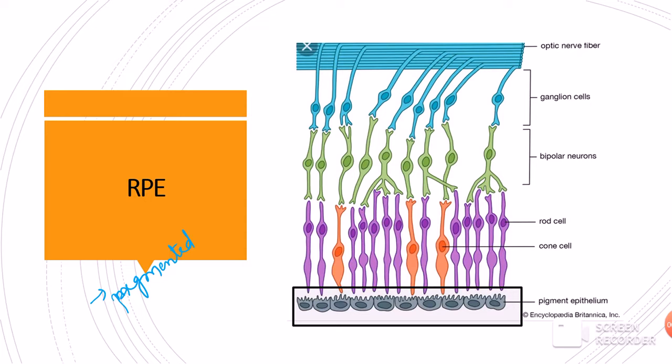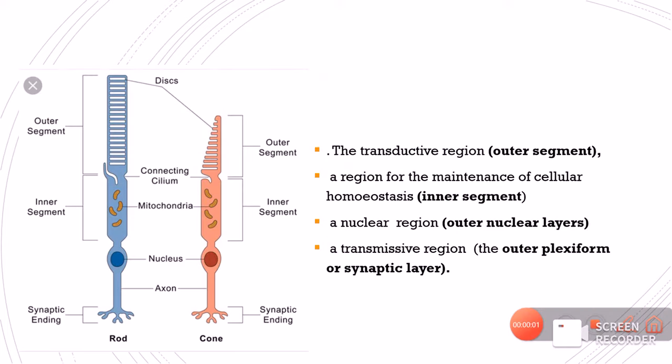A second function of the RPE is that whatever waste products are generated by the cone and rod cells, they will also be taken care of by the pigment epithelium cells.